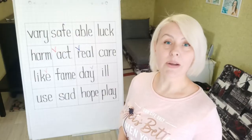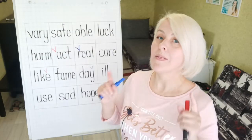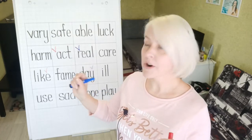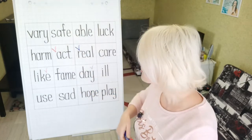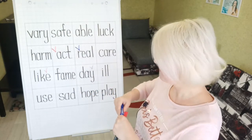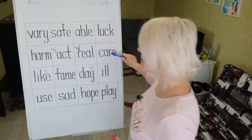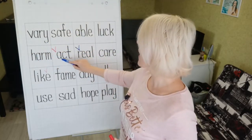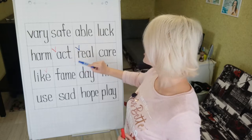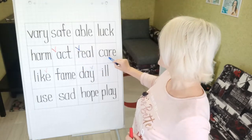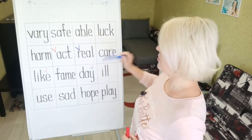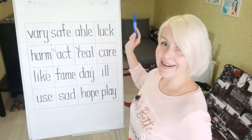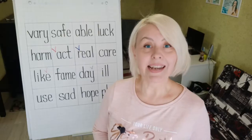The winner is the team who manages to put 4 new words in a row — either horizontally, for example: harmful, act, action, real, unreal, careful — or vertically or diagonally.